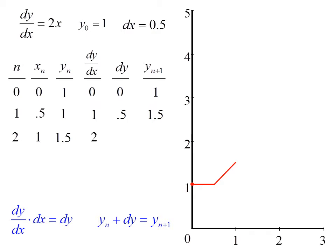And we repeat the process, finding a new value for dy/dx, multiplying by dx to get dy, and adding that number to the previous y to get the next value of y. So after three iterations, we are at 1.5, 2.5.